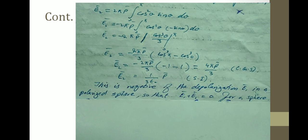Evaluating this integral in the CGS system, using cos π = −1 and cos 0 = 1, the final value is E2 = −4πP/3 in the CGS system. Dividing by 4πε₀ gives the SI system result: E2 = P/(3ε₀). This is the negative of the depolarization field E1 in a polarized sphere, so that E1 + E2 = 0 for a sphere.